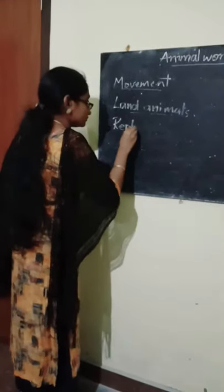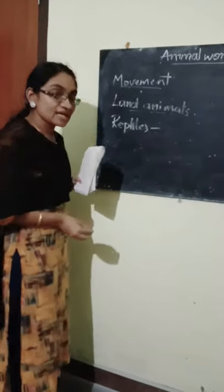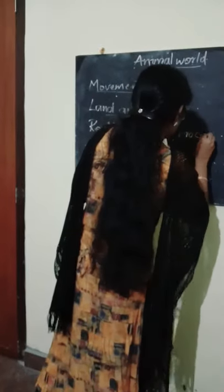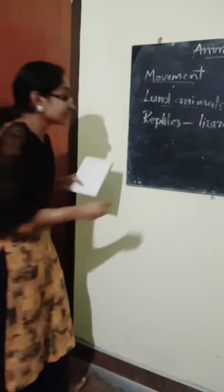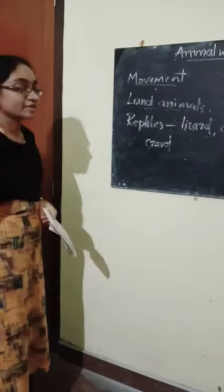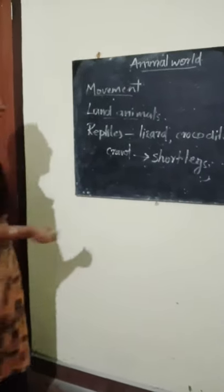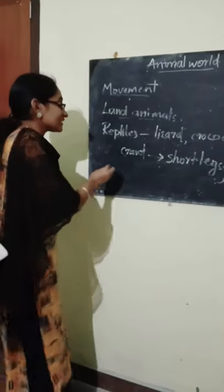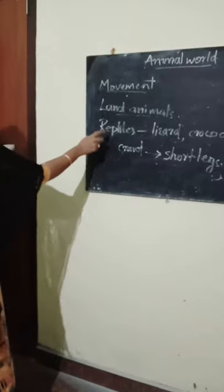While considering reptiles, the examples are lizards and crocodiles. These animals just crawl — we don't say they are walking; they are just crawling on the land using their short legs. You can see lizards in your home. When you observe them, you can see they have small legs and are just crawling through the wall. This is about reptiles.